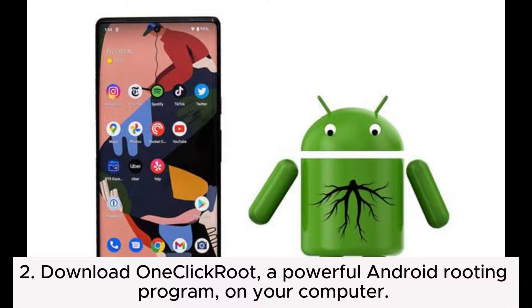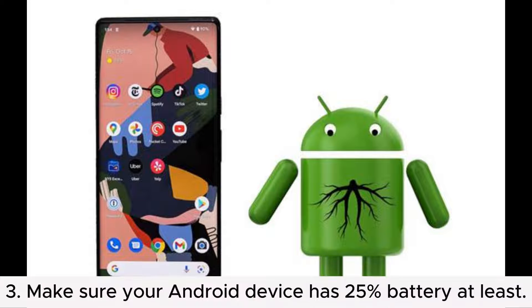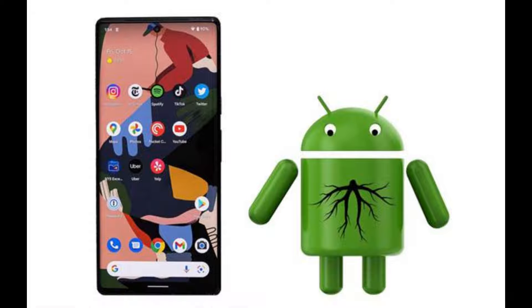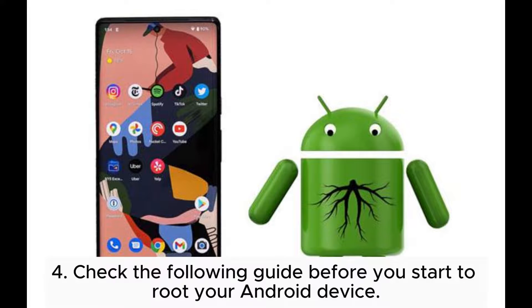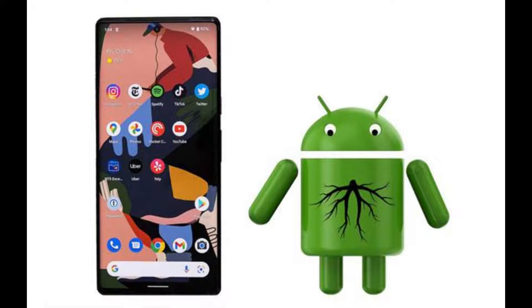2. Download OneClickRoot, a powerful Android rooting program, on your computer. 3. Make sure your Android device has at least 25% battery. 4. Check the following guide before you start to root your Android device.